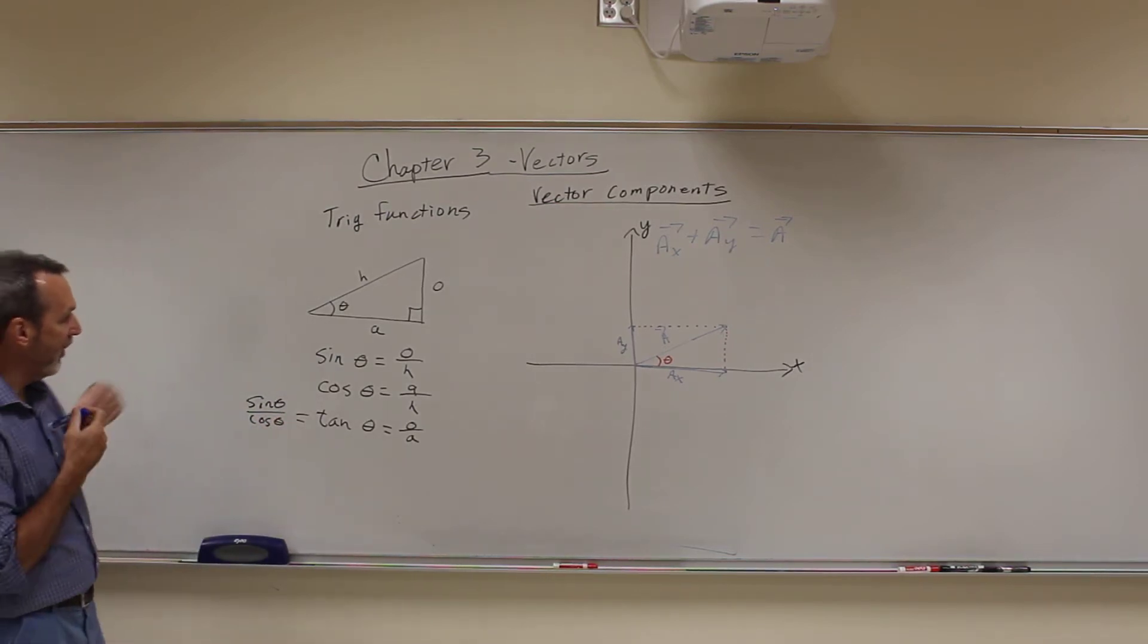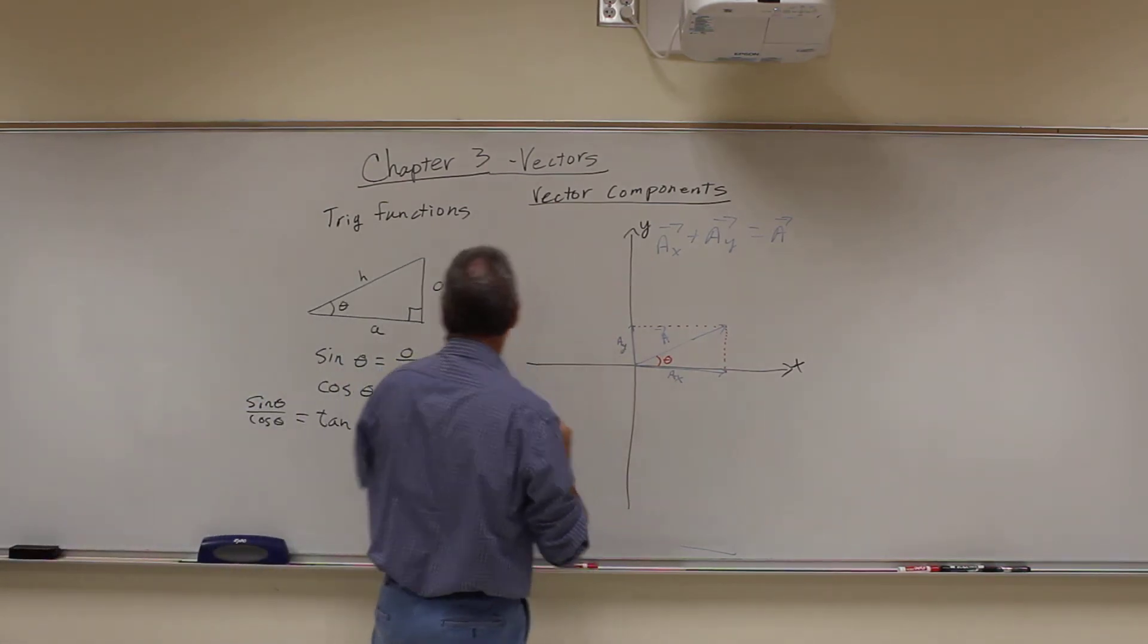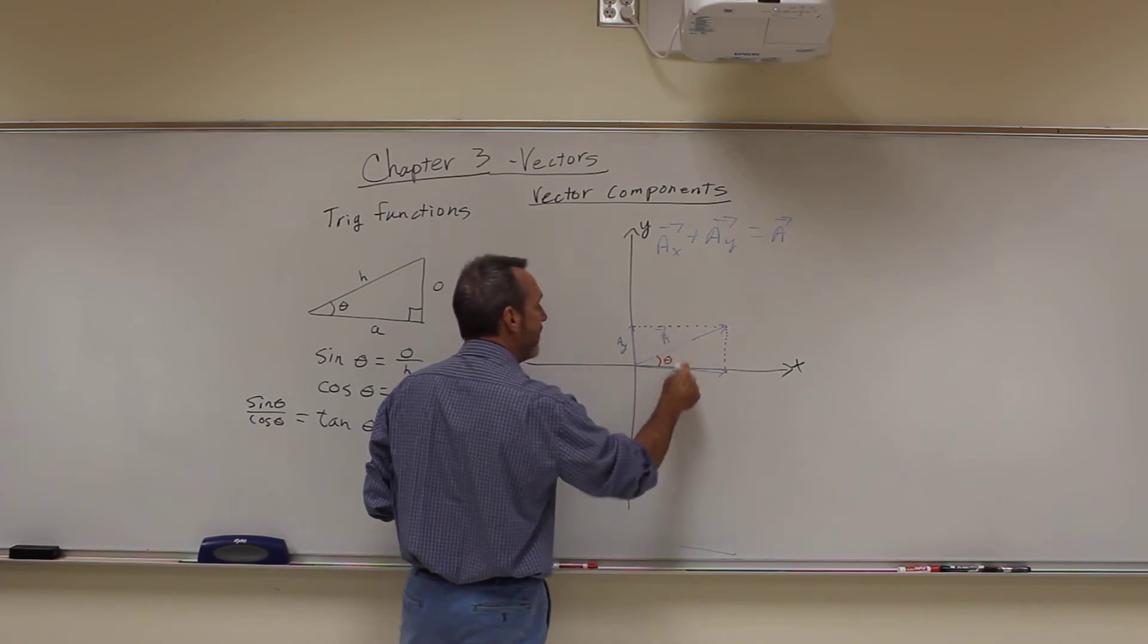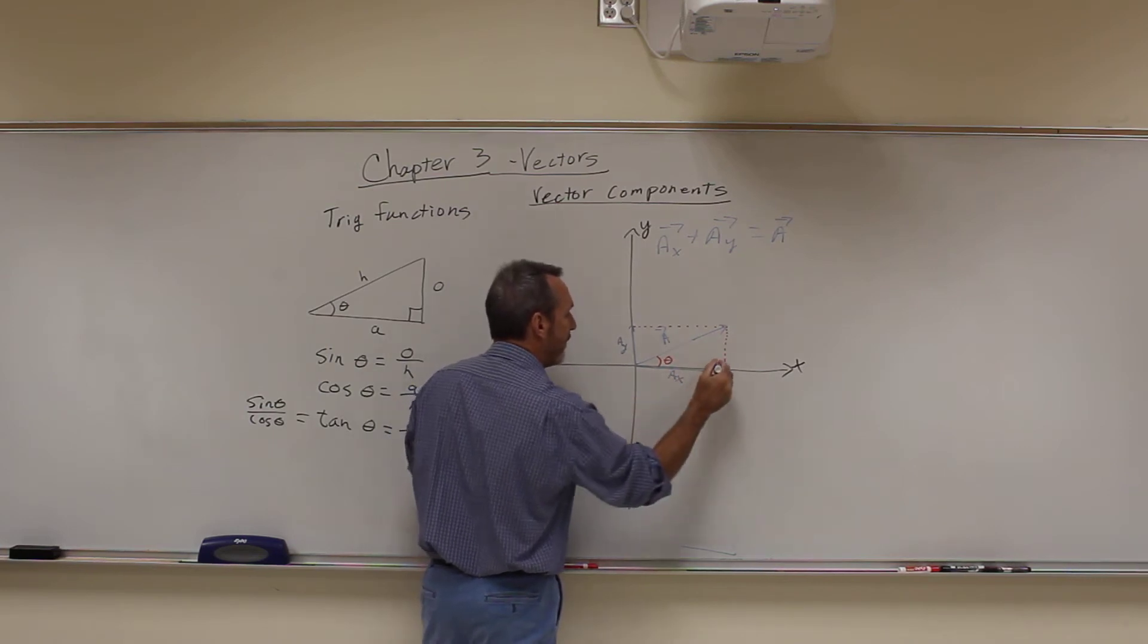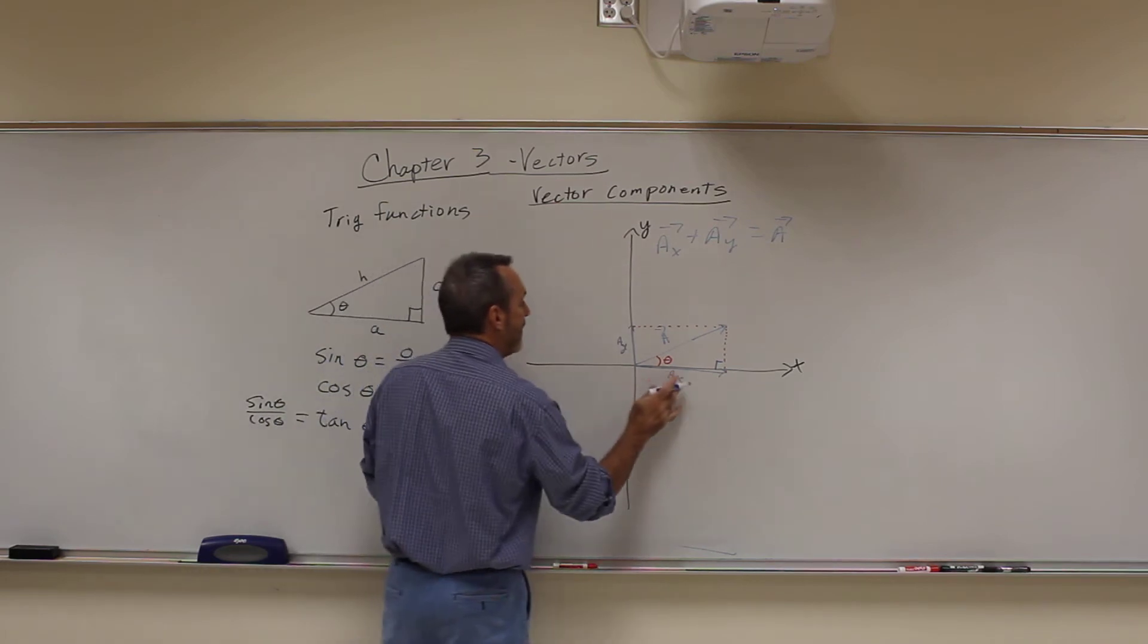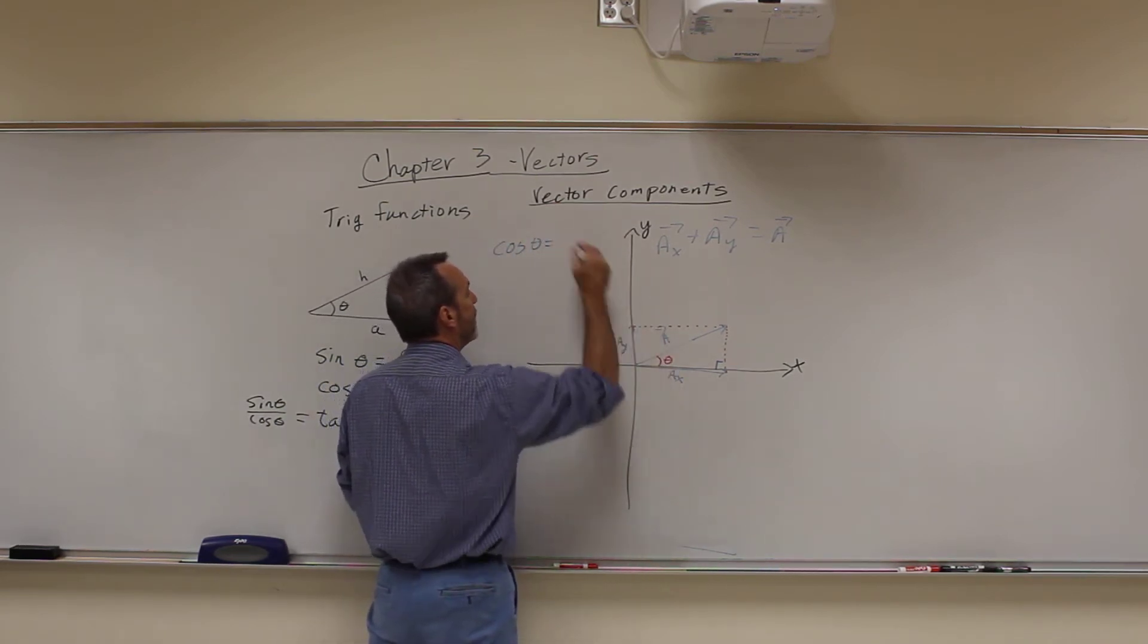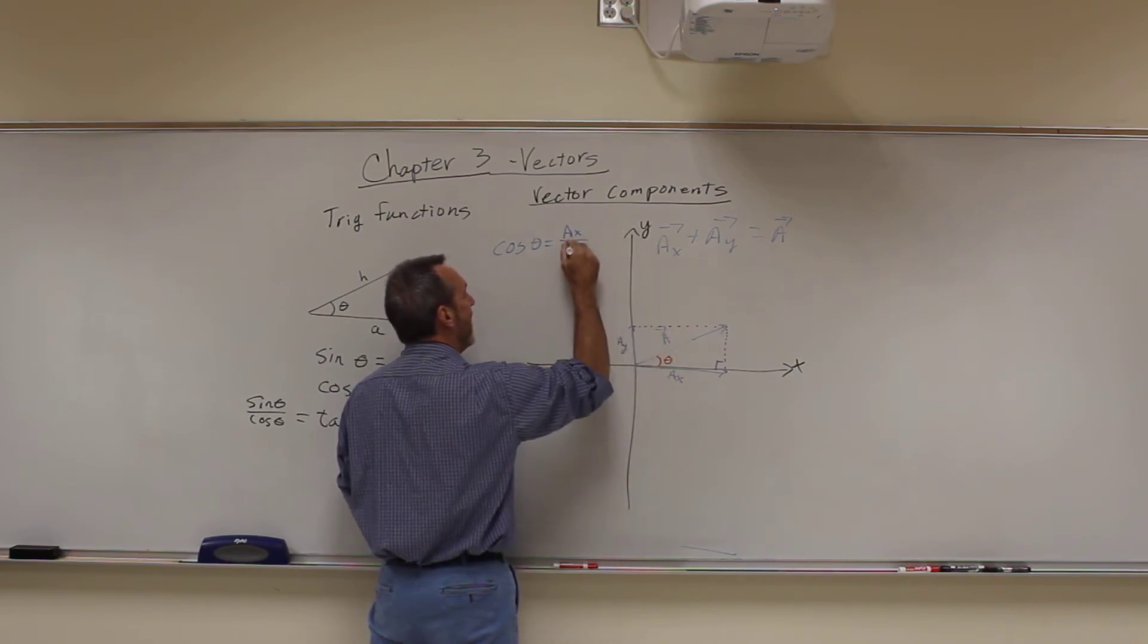But we're going to use those all the time. Now, so in this case, if I want to figure out what AX is, this vector down here, I know A and I know theta, then since this is the adjacent side, this is my triangle, the right angle is right here. So it's set up exactly like this one. I'm going to use cosine. So I'm going to say, oh, the cosine of theta is equal to AX, the adjacent, over the hypotenuse, which is just A.